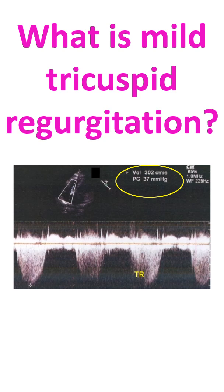The TR gradient is the pressure difference between the right ventricle and right atrium when the right ventricle contracts. Usually, a nominal value of 10 mmHg representing the pressure in the right atrium is added to the TR velocity gradient to get the estimated right ventricular systolic pressure, or RVSP. It is the maximum pressure developed when the right ventricle contracts.